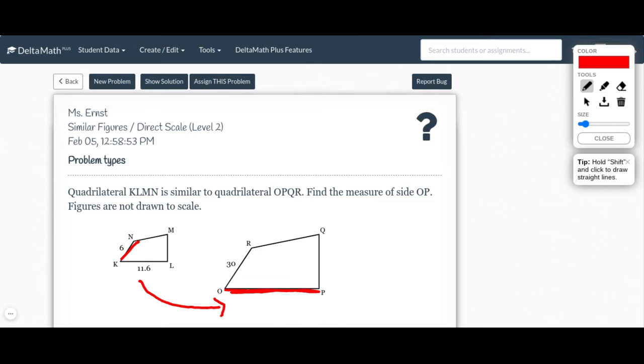So I'm going to look at side KN and compare it to side OR over here because they are corresponding sides. And I know that when I take 6 times 5, I get to 30. So that means that my scale factor is 5.